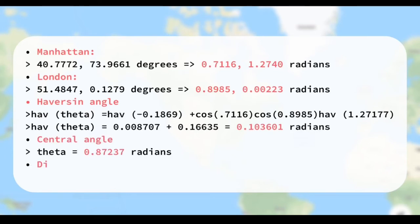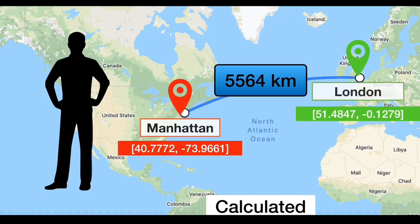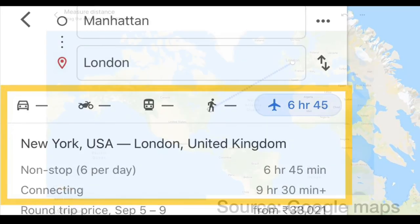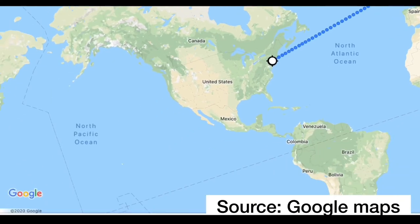then substituting it in the central angle formula, theta equals d by r, and solving the equation for d should yield 5564 km, which is surprisingly similar to the value measured with the help of Google Maps.